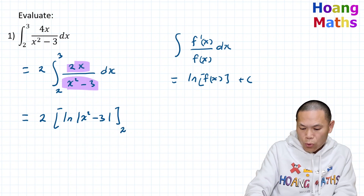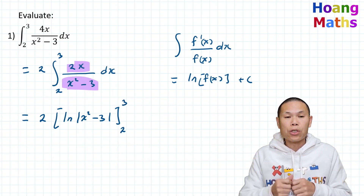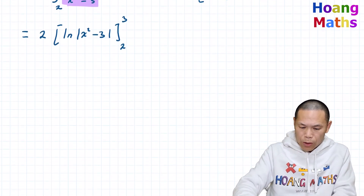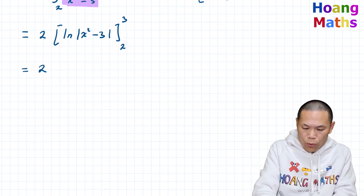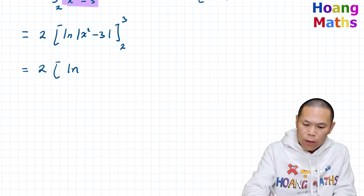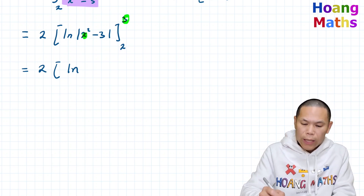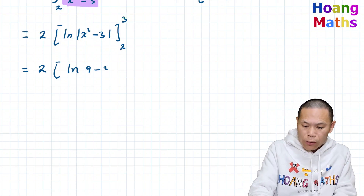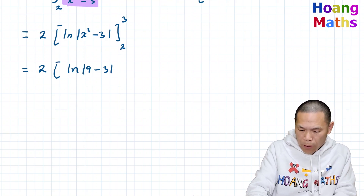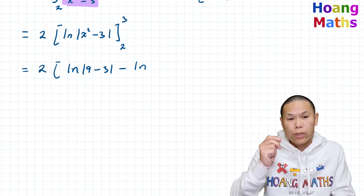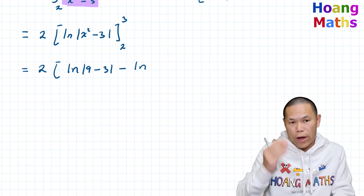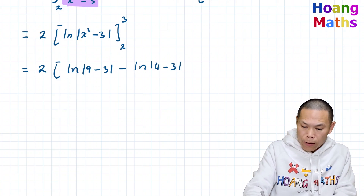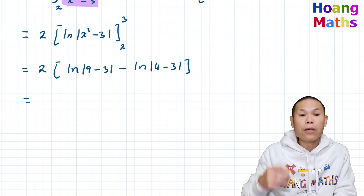With absolute value just in case the value is negative. So we evaluate from 2 to 3. I substitute 3 into x and 2 into x. So that gives me 2 times ln of 3 squared minus 3, so 9 minus 3, absolute value. And then we minus ln of 2 squared minus 3, which is 4 minus 3. I'll just write 4 minus 3 first, just in case.